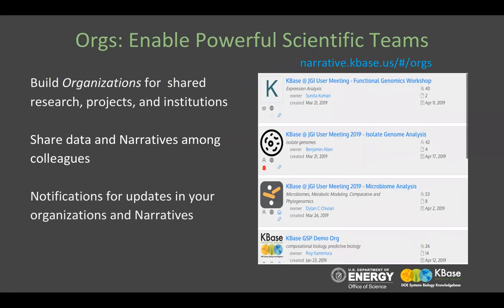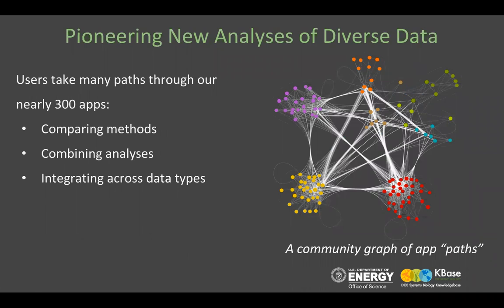KBase Orgs support external collaborators by providing a powerful mechanism to share data and analysis through narratives among colleagues. All members of a particular organization can view the list of narratives associated with that org — it works like a Dropbox where you can share private and public data with all members. Most importantly, orgs enable global team collaboration. Researchers can build an organization to share project work with team members and receive notifications for updates in their organizations and narratives.